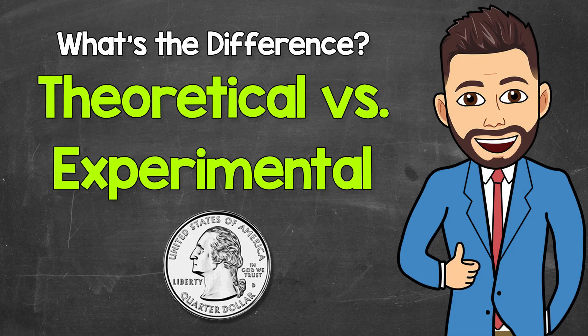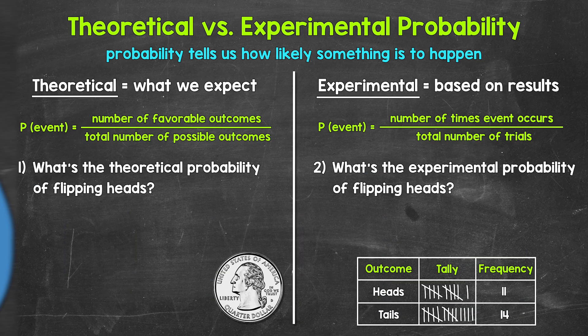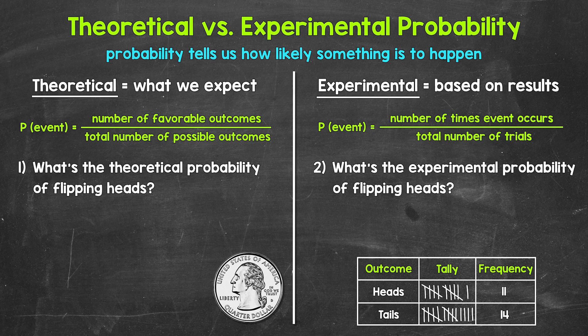Welcome to Math with Mr. J. In this video, I'm going to cover the difference between theoretical probability and experimental probability. Remember, probability tells us how likely something is to happen — in other words, the chance of something happening. Let's use flipping a coin to find out the theoretical probability and the experimental probability of flipping heads.